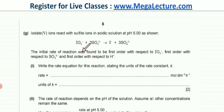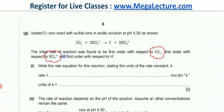The initial rate of the reaction was found to be first order with respect to IO3⁻, first order with respect to SO3²⁻ ions, and also first order with respect to H⁺ ions, which is probably acting as a catalyst. So with all three reactants and the catalyst, each is found to be first order.